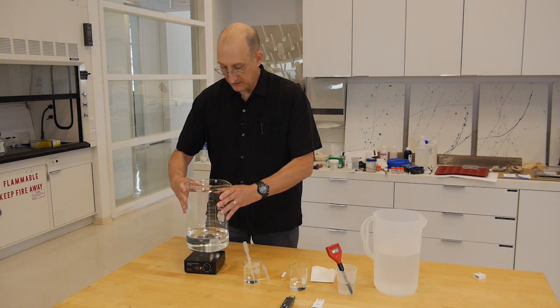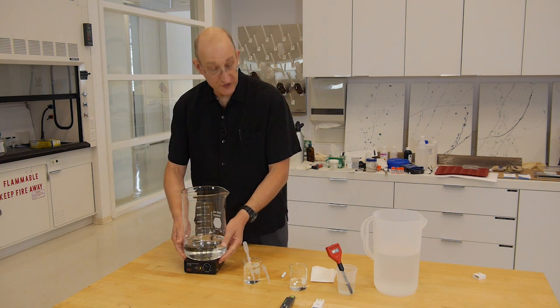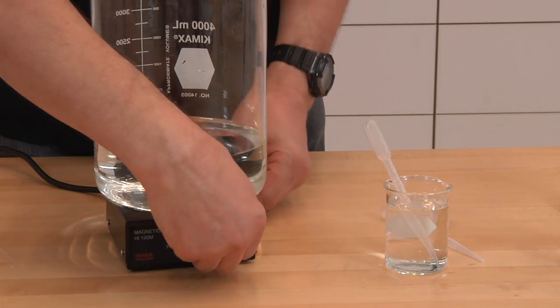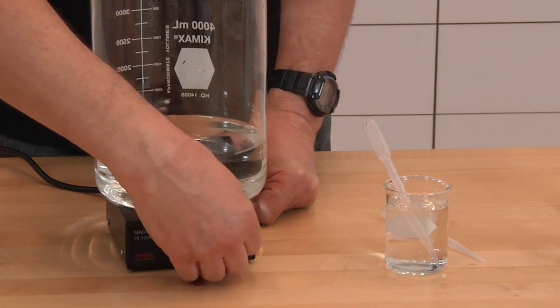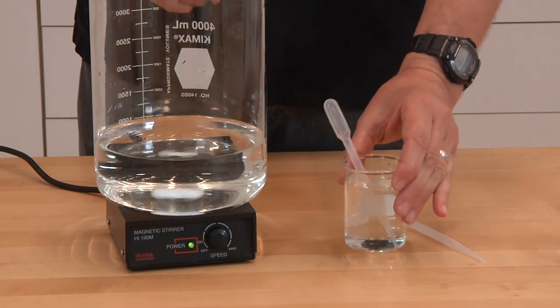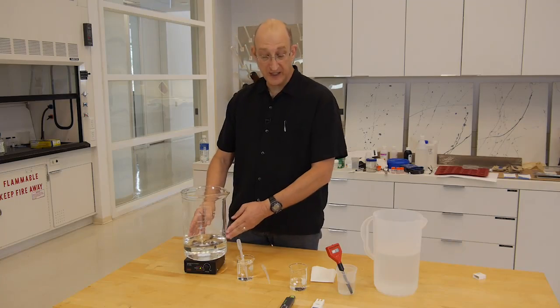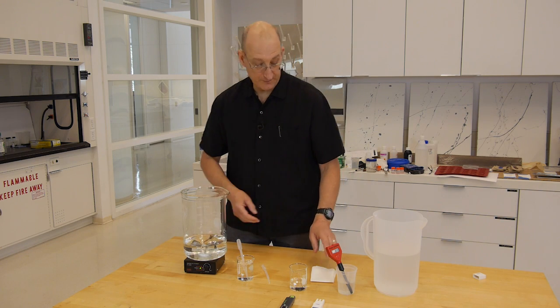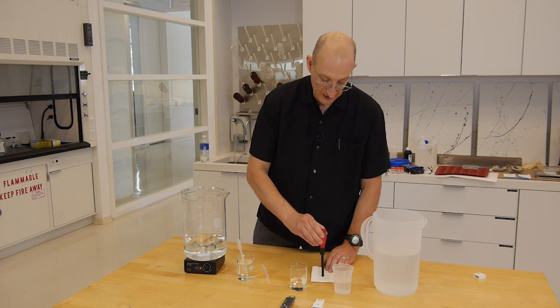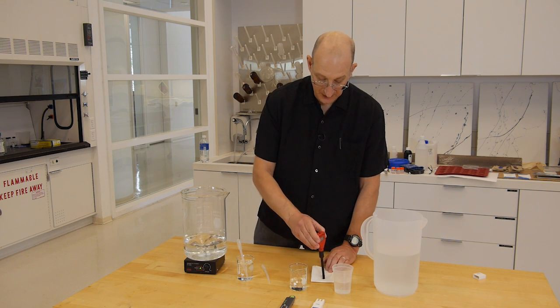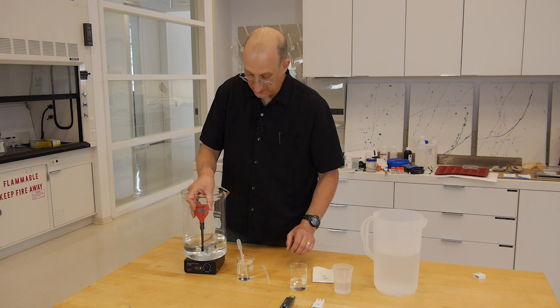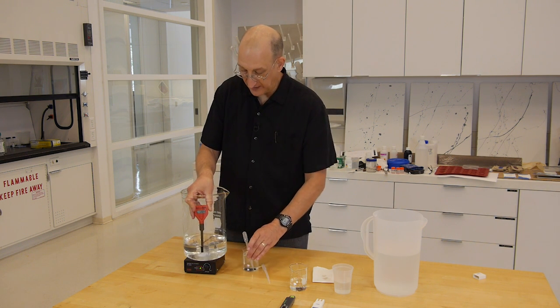So here's our 10 milliliters of glacial acetic acid in a liter of water. Put in our stir bar, start it stirring. Now we're going to add the 10% ammonium hydroxide to this until we get the pH of 6.0. We have the pH meter in tap water, blot, distilled water, blot, and into our acetic acid solution.